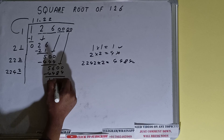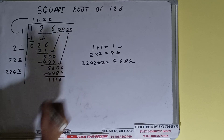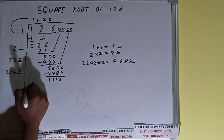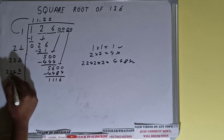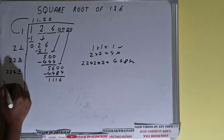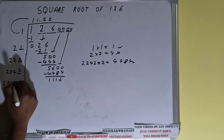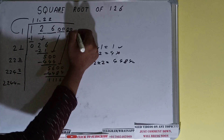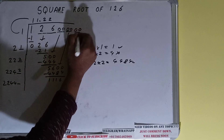We'll be left with 1116. We did 2242 into two, so add both: 2242 plus two will be 2244, and one digit extra. Bring one more pair of zeros down.